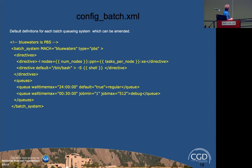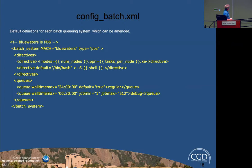For config_batch, there are defaults for each batch system, and you can customize for a given machine. Here's an example for the now-retired Blue Waters machine. You can specify particular directives that machine understands, and you need to specify the queues for each machine: what the default queue is, what the max wall time is, and the minimum and maximum job size for each queue.